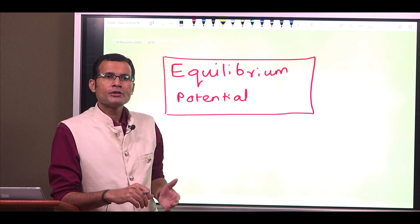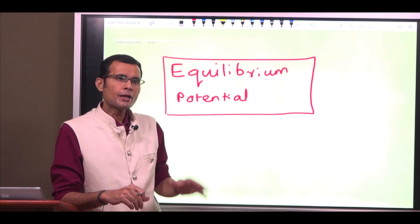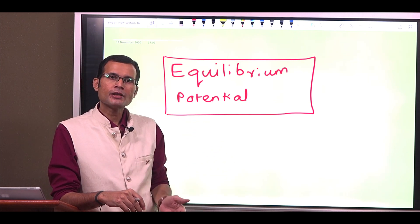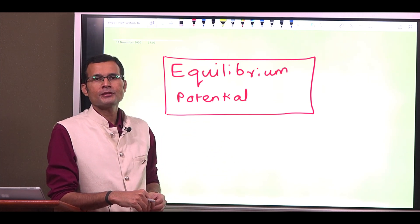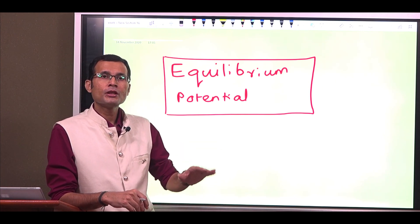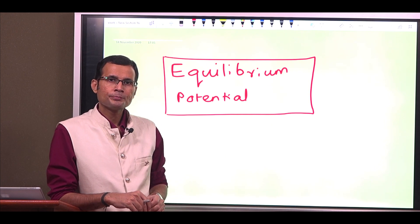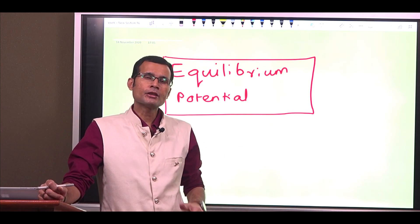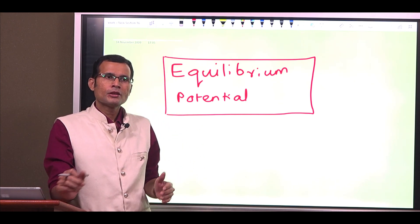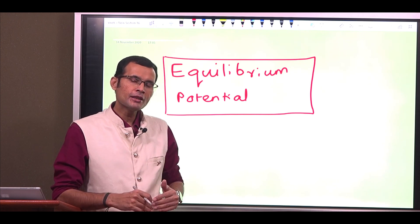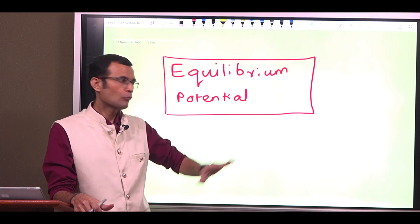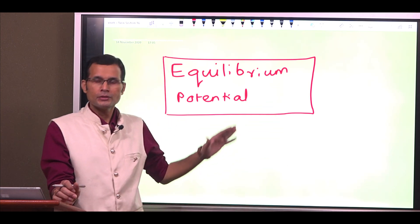Similarly, equilibrium potential for which ion is closest to the RMP of a nerve? Again, the same four options: sodium, potassium, calcium, chloride. This time the answer is different. RMP of a nerve is minus 70 millivolts. The first answer was chloride. The second one is also chloride, but technically speaking it could be potassium. We will discuss all of this in the video.